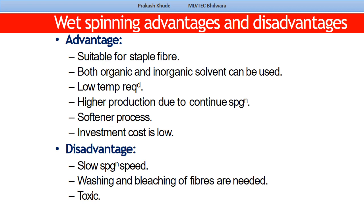The basic advantages and disadvantages of wet spinning: unlike dry spinning, which is mainly used for fine denier fiber, wet spinning is suited for staple fiber. Both organic and inorganic solvents can be used. Low temperature is required compared to dry spinning which needs hot air. High production is possible with continuous spinning, and investment cost is very low. The disadvantages are that spinning speed is very slow, washing and bleaching of the fiber are needed, and there is toxicity due to the solvents and chemicals used.